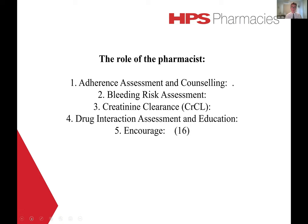Second, bleeding risk assessment. Important considerations include excessive alcohol use, NSAID use, and uncontrolled systolic blood pressure greater than 160 mmHg. Concomitant use of acetylsalicylic acid increases the risk of bleeding in combination with DOACs by 30 to 60 percent.